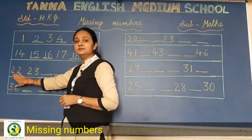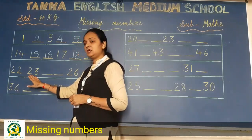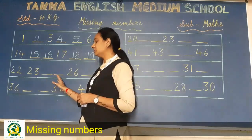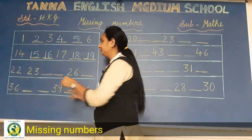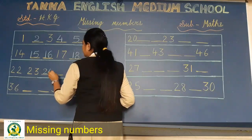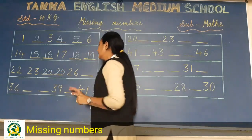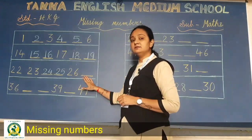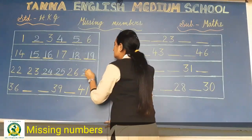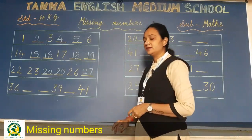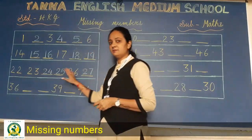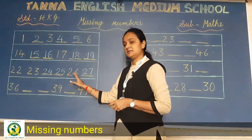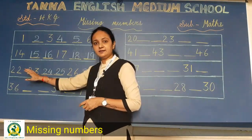Now 22, 23 is written. Now what will come? Yes, 24, 25. So write here 24 and 25. Now 26 is written, then yes 27. So write here 27. So now this line also we have completed: 22, 23, 24, 25, 26 and 27. Complete हो गई, very good.